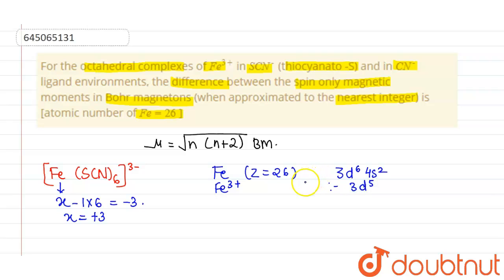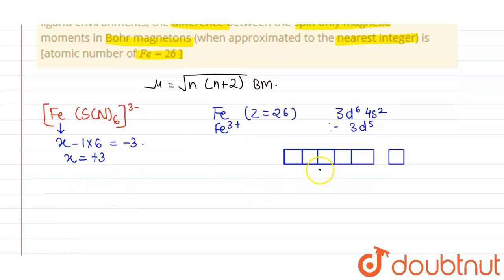We need to calculate the number of unpaired electrons. In 3d there are 1, 2, 3, 4 and 5 electrons. This SCN minus ligand present here is a weak field ligand. As it is a weak field ligand, it won't initiate pairing and the number of unpaired electrons in this complex remains 5.